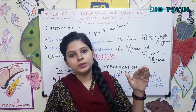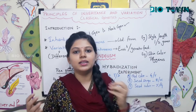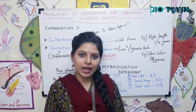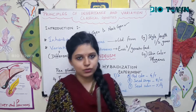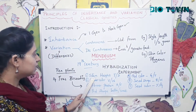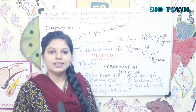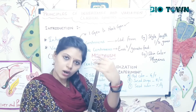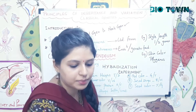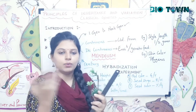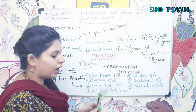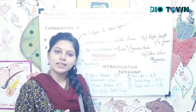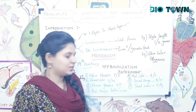The pea plant also had many contrasting characters — characters which are opposite in nature, like tall and short. Mendel identified seven pairs of contrasting characters. The first is stem height: tall stem versus short stem. The second is flower color: white flowers versus violet flowers.